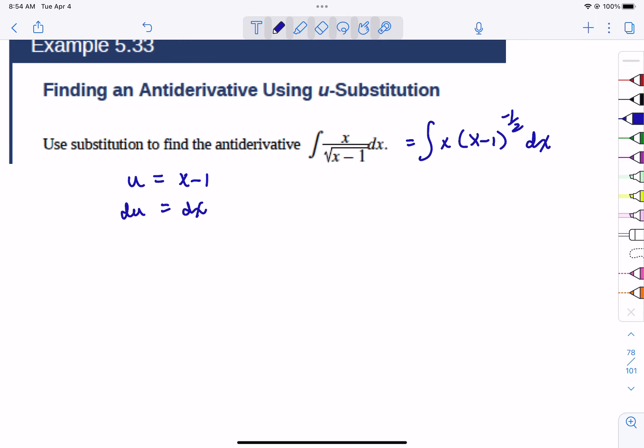And so du is dx, because it's just 1 times dx. So here's where the problem occurs. Watch what happens. This comes out, that is du. This comes out, that becomes u. Have we substituted all of the x's in the problem? Still got one?